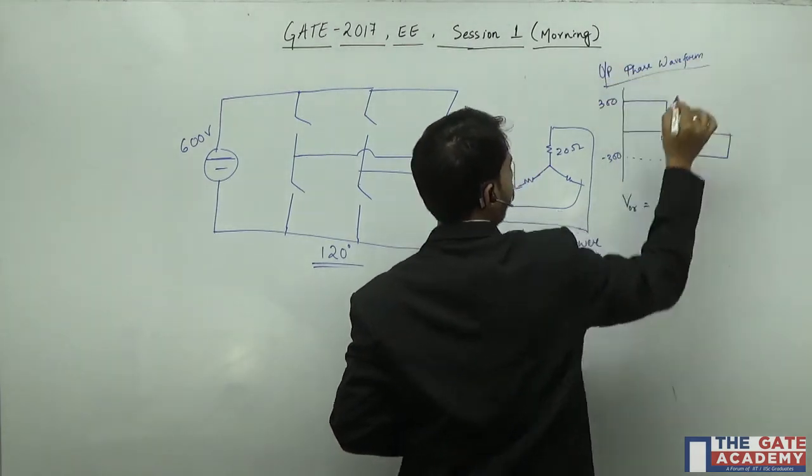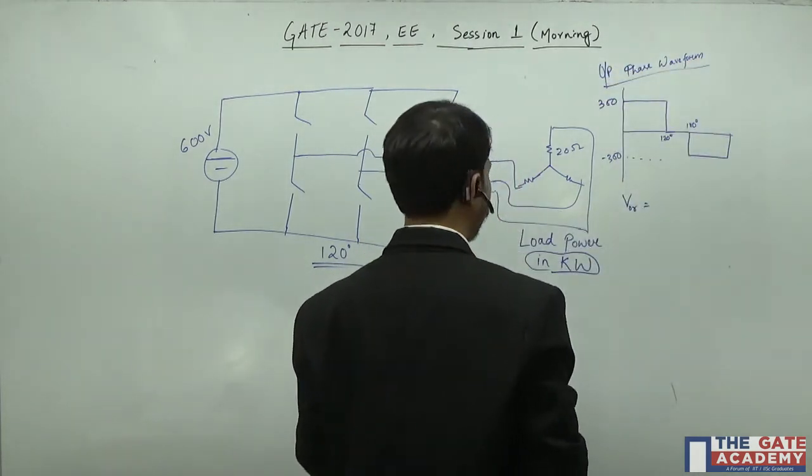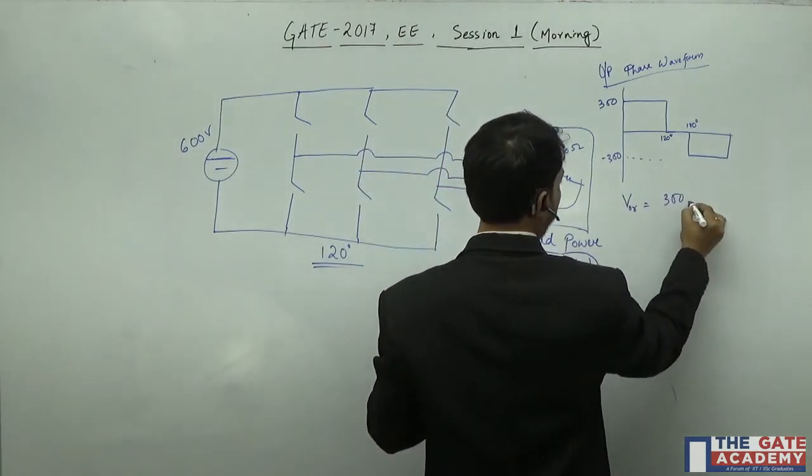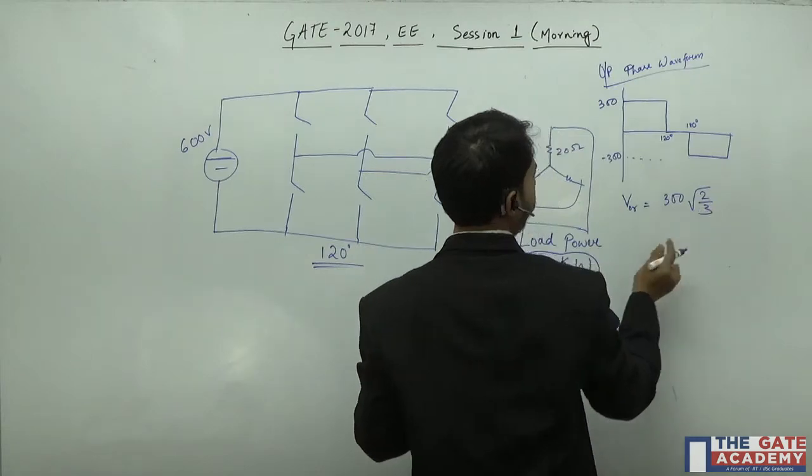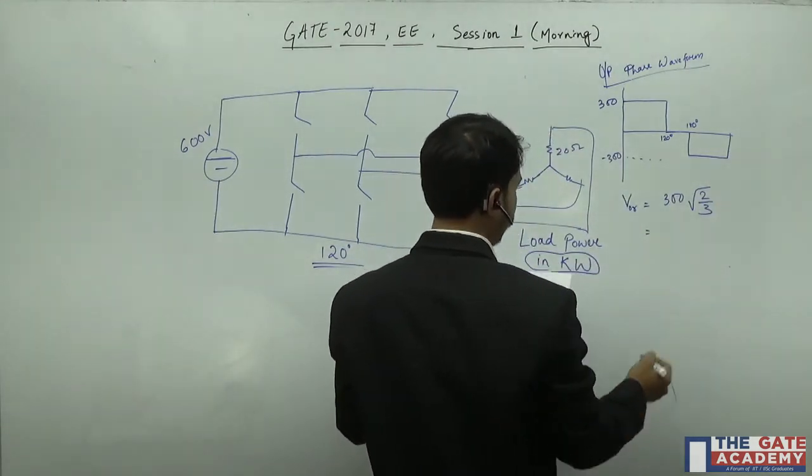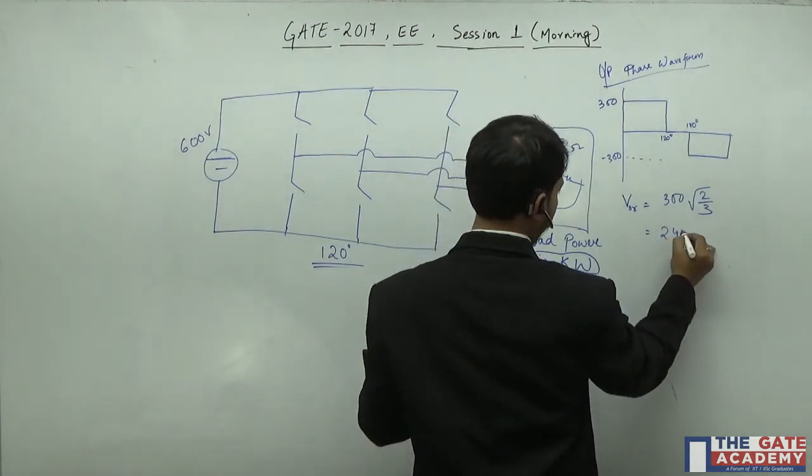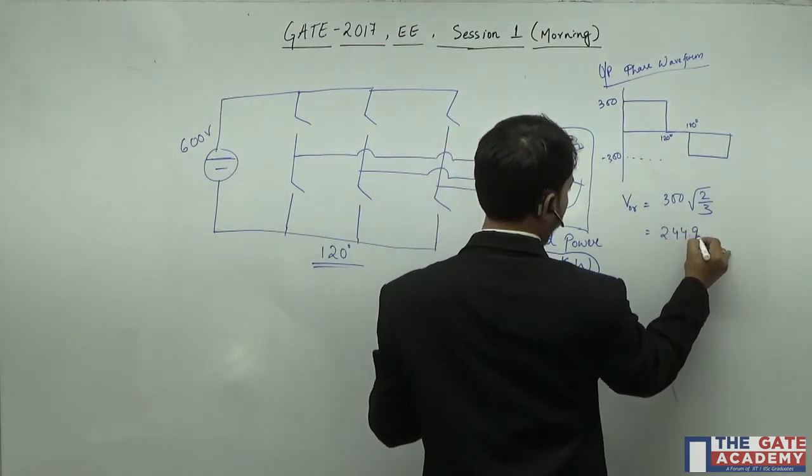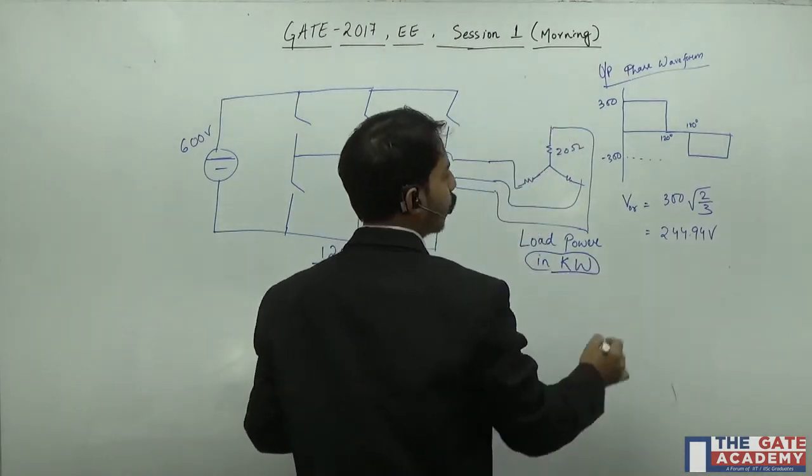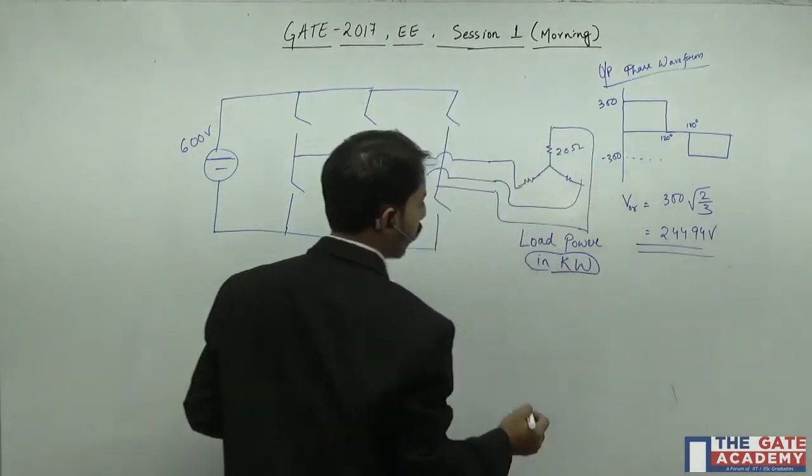So if we calculate the RMS value for this, it will be 300 into root 2 by 3, just by looking at the waveform we can see that. So after calculation it will be 244.94 volts per phase. So if this is one phase value, the output power we know.